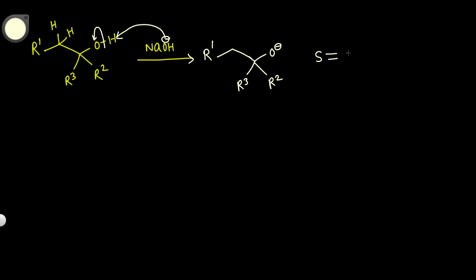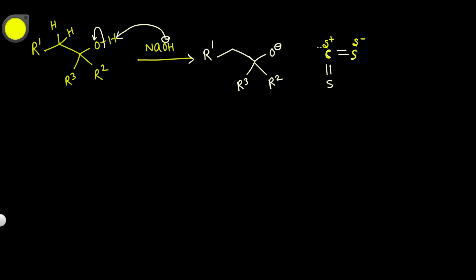Then we introduce carbon disulfide (C=S=S). The O⁻ will attack on the carbon of carbon disulfide because there is an electronegativity difference: sulfur is more electronegative and carbon is electropositive, giving carbon a delta positive charge. So the O⁻ attacks the carbon, and the bond shifts onto the sulfur, giving a sulfur negative charge (S⁻).